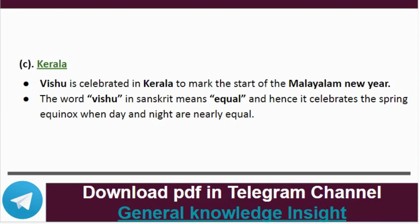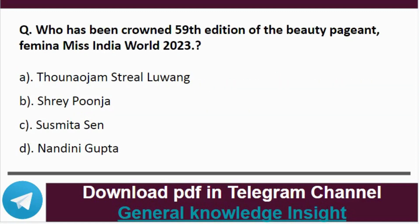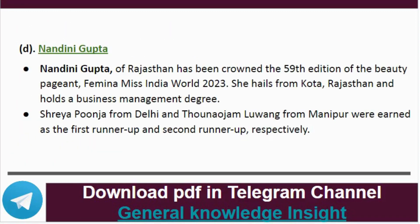Question 10: Who has been crowned at the 59th edition of Femina Miss India World 2023? The correct answer is option D, that is Nandini Gupta. Nandini Gupta from Rajasthan has been crowned at the 59th edition of Femina Miss India World 2023. She hails from Kota, Rajasthan, and holds a business management degree. Shriya Poonja from Delhi and Thangtam Pankholun from Manipur were the first runners-up and second runners-up respectively.